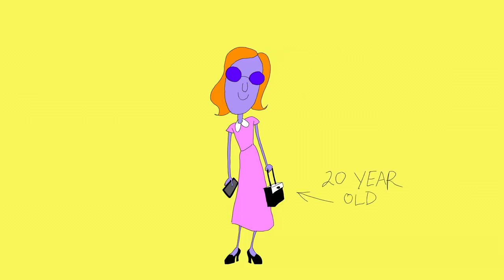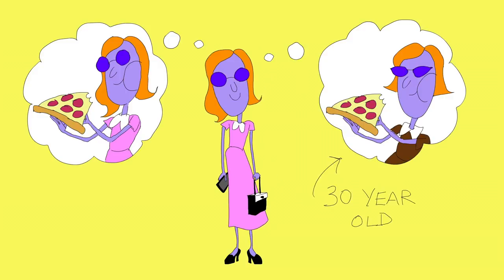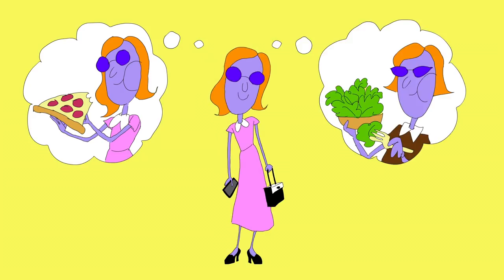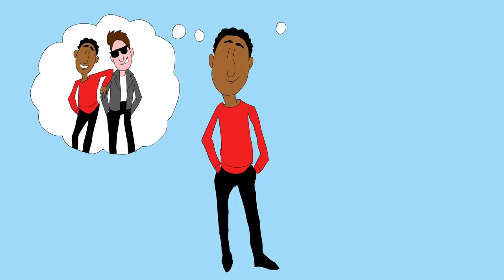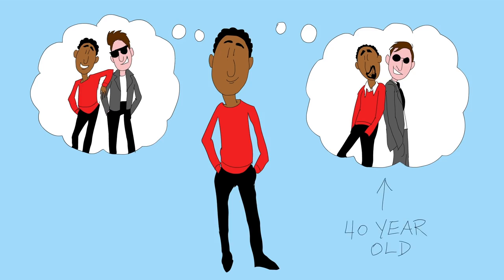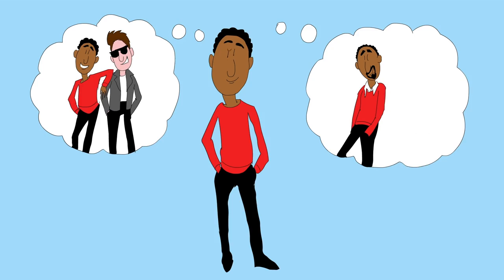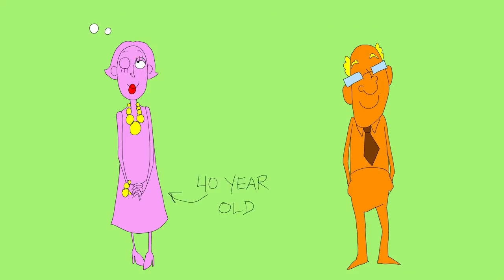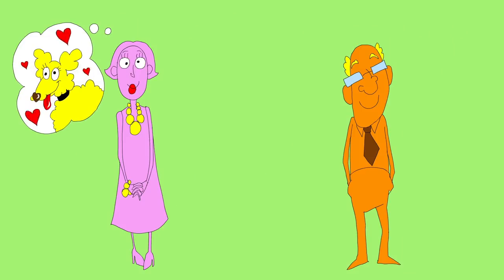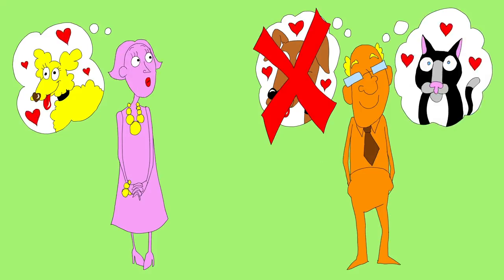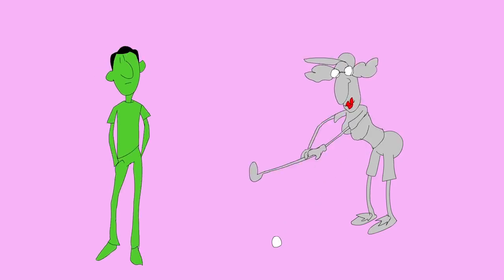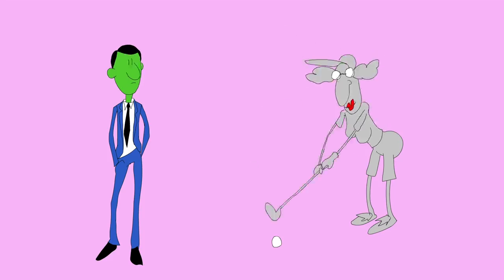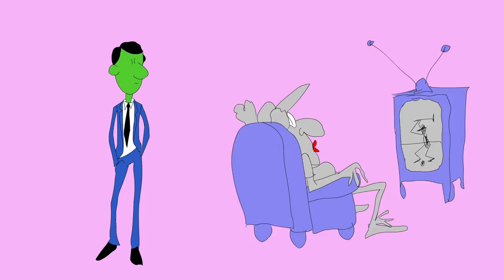20-year-olds expected to still like the same foods at 30, but 30-year-olds no longer had the same tastes. 30-year-olds predicted they'd still have the same best friend at 40, but 40-year-olds had lost touch with theirs. And 40-year-olds predicted they'd maintain the same core values that 50-year-olds had reconsidered. While older people changed less than younger people on the whole, they underestimated their capacity for change just as much.